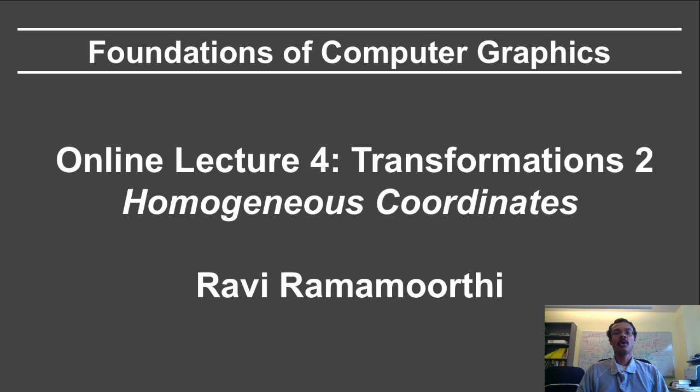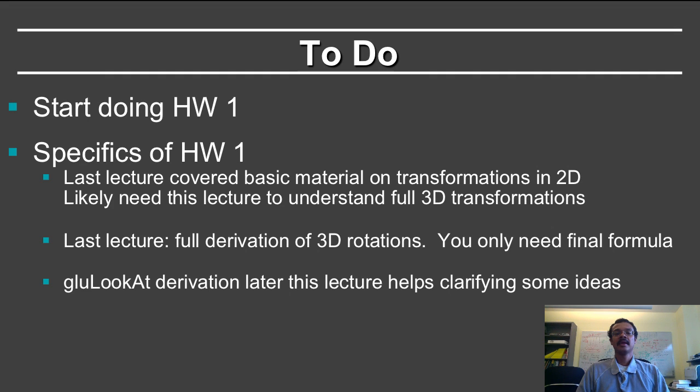This segment deals with homogeneous coordinates and normals. Homogeneous coordinates are one of the most interesting topics in computer graphics and really fundamental to the way we think about transformations. After the current lecture, you should start doing homework 1 because it has all of the information you need. The last lecture talked about 3D rotations. We will summarize those results here. For the homework itself, you probably only need the final formula, although it is good to understand the derivation. This lecture will close with the derivation of GLU look at, which is in the last segment of the lecture, and that helps in clarifying many of the ideas you will need for homework 1.